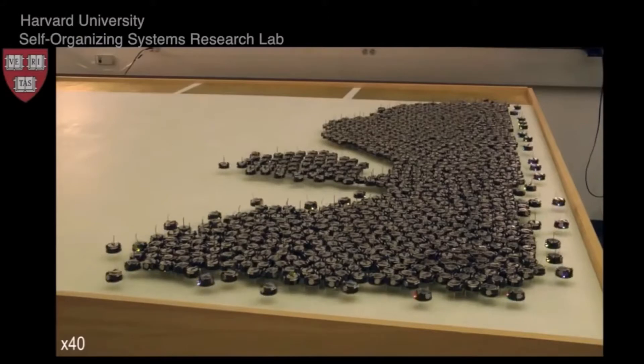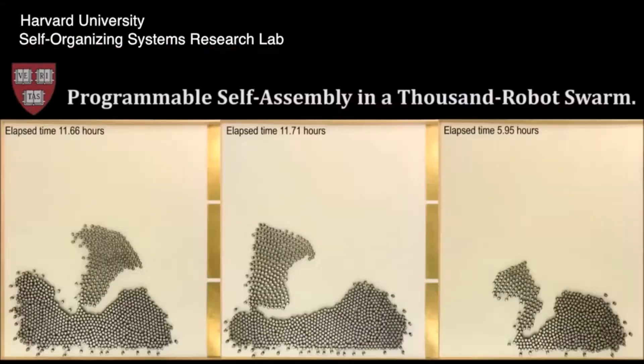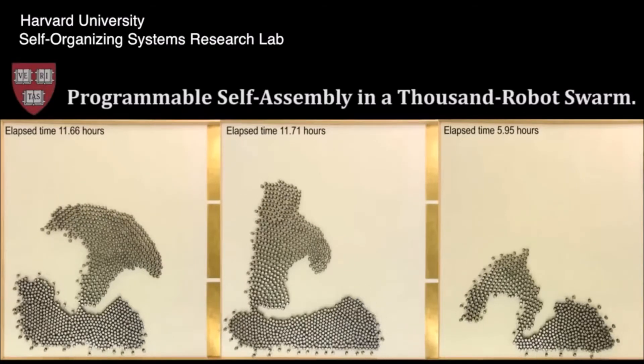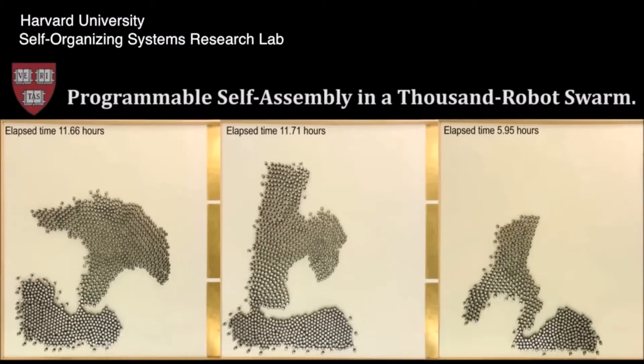Number 10. Kilobot. Hundreds, even thousands of machines working together as one is a great idea, especially when they're able to organize and arrange themselves. Swarm technology has proven difficult to perfect due to cost, so this group of minis was created on the cheap for testing purposes.